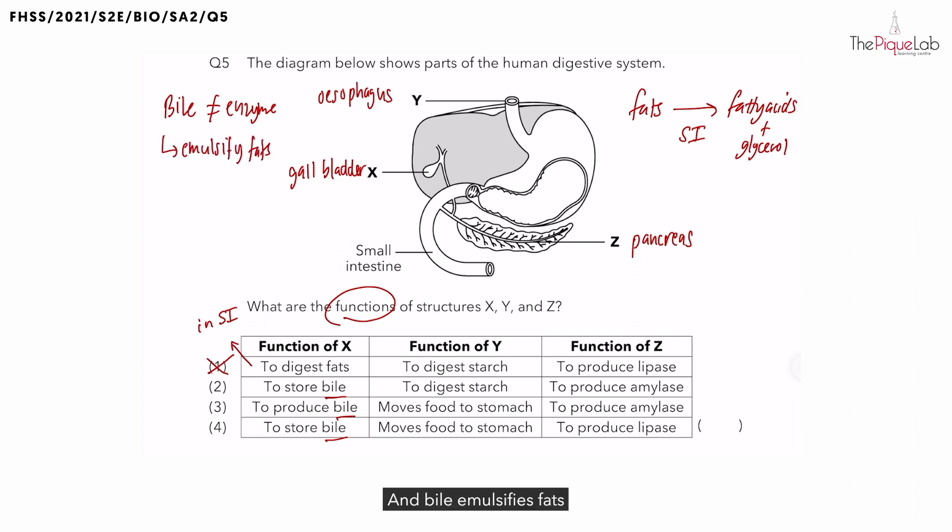And bile emulsify fats from larger droplets to smaller droplets. Very much like the chewing action of your teeth. What does chewing do to the food? Chewing actually helps to break up the food from larger pieces to smaller pieces. So is this an example of chemical or physical digestion?